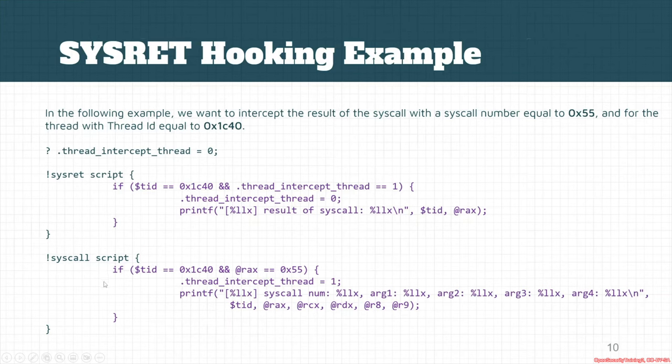For the syscall part, we check whether the thread ID pseudo-register equals our target thread ID. Then we check whether the system call number, which is located in the RAX register, equals 0x55.